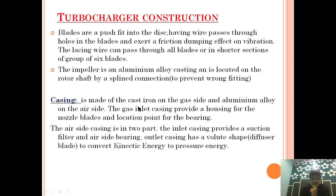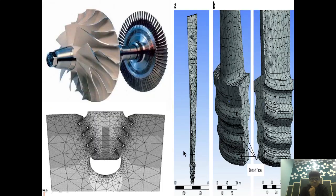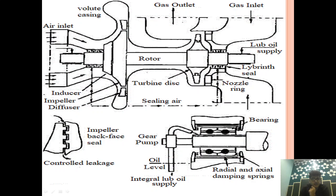The casing is made of cast iron on the gas side and aluminium alloy on the air side — very important. The gas inlet casing provides a housing for the nozzle blades and a location point for the bearing. The air side casing is in two parts: the inlet casing provides a suction filter and air side bearing, and the outlet casing has a volute-shaped diffuser to convert kinetic energy to pressure energy.